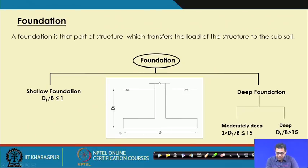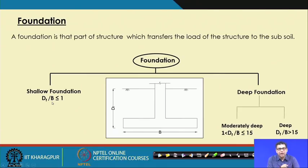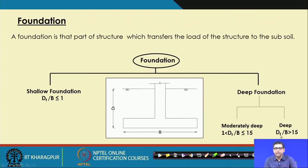The depth of foundation is measured from the ground surface to the base of the foundation, and width of foundation is B. If this condition is satisfied, it is called a shallow foundation. For deep foundation, the depth is greater than the width. If the ratio Df/B is greater than 1 but less than or equal to 15, it is in an intermediate range; if greater than 15, it is called a deep foundation. In this lecture I will discuss shallow foundations, and in coming lectures I will discuss deep foundations also.